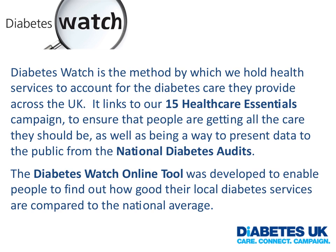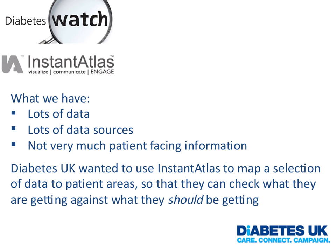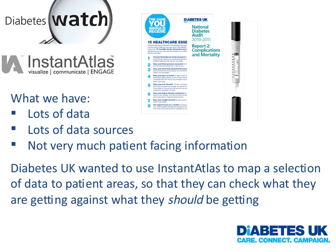Within the diabetes community, we have loads of data — a very large national audit program and lots of different data sources. The difference between data and information is that we have lots of data but not very much patient-facing information. Our role is to take the very complex data that comes out of all the various audits and make it palatable and easy for people to understand so they can actually see what's going on. We use the Instant Atlas tool to map a selection of data to patient areas so they can check against the 15 healthcare essentials, showing data for their local areas against national average figures.